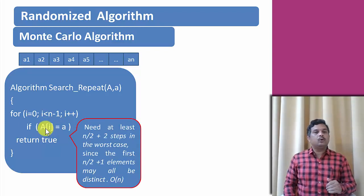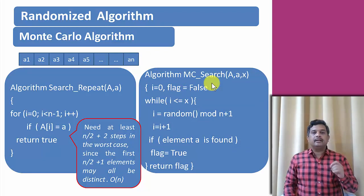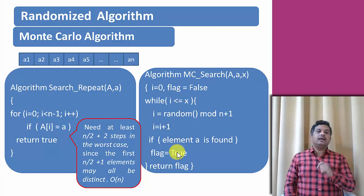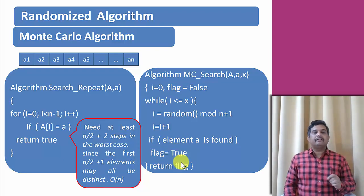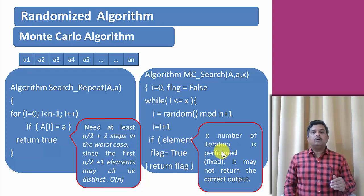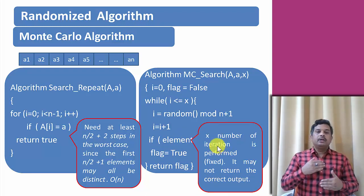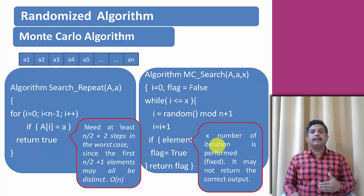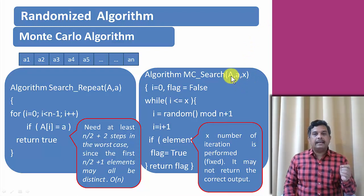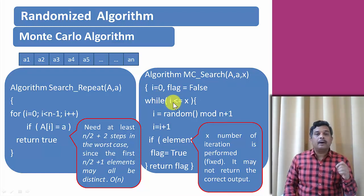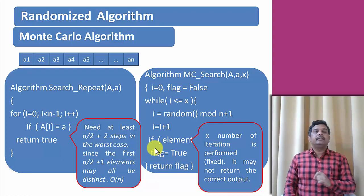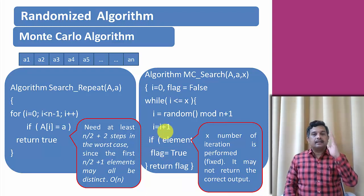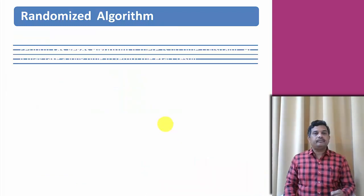The complexity of the standard search is O(n). If we want to use Monte Carlo search, we take a random number, increment it by 1, and if the data exists we set a flag to true and return the flag. The output may or may not be correct, because the while loop runs x number of iterations — where x is the number of iterations passed as input — so it is not guaranteed that within x iterations we can find the data.